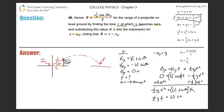Now solving for t — we divide both sides by ½g, which is the same as multiplying by 2. The result is: t = 2 · v_i · sin θ / g. This is the time at which y returns to zero.